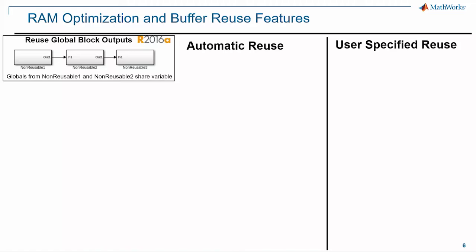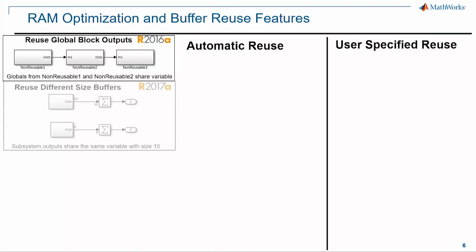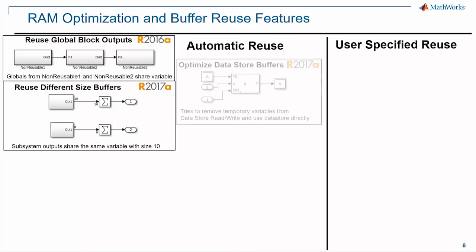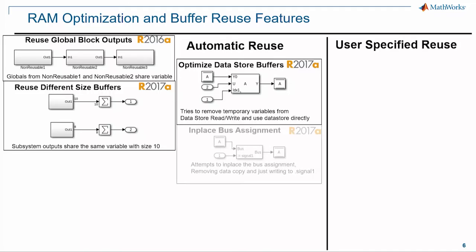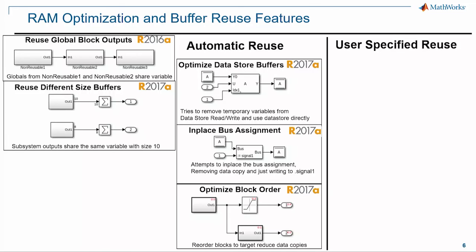In 16A, we introduced automatic reuse of global buffers. In 17A, we introduced the ability to reuse also across different sizes. We also introduced how to reuse the data store automatically — particularly in the presence of Simulink functions, you can see this feature showing its value. We also automatically do in-place pass assignment, which further reduces data copies, and introduced the ability to automatically reorder block execution to favor buffer reuse.